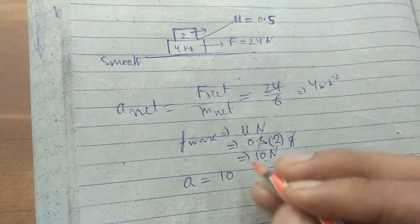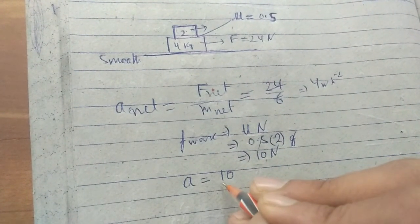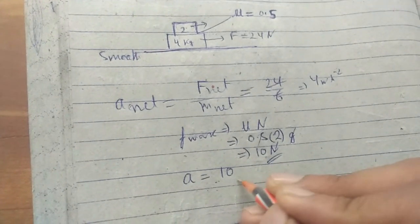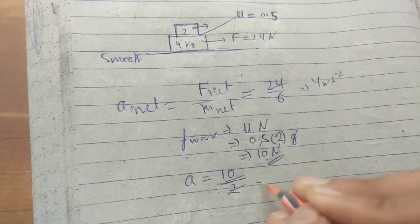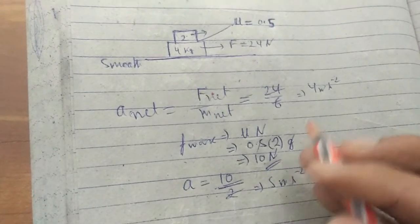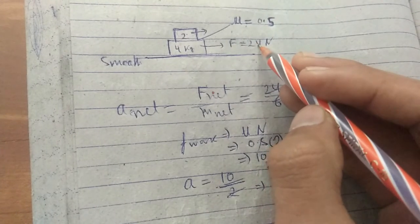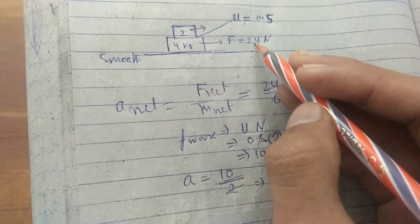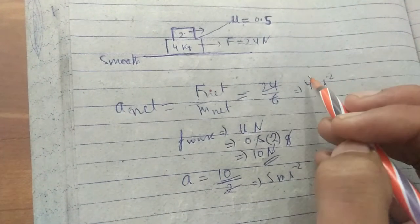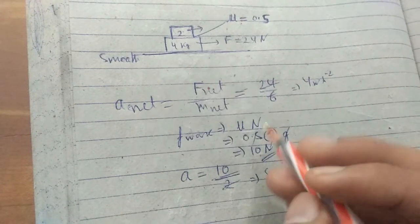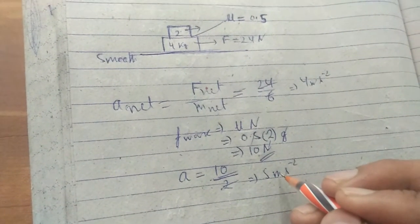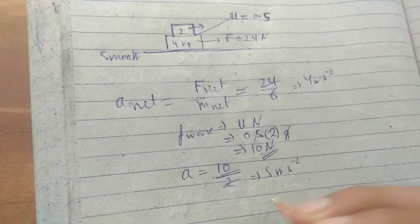So the acceleration on the 2 kg block system will be net force upon mass: 10 N upon 2 kg. So it can provide a maximum acceleration of 5 m/s². But this force is applying a maximum acceleration of 4 m/s². And this friction force can give a maximum acceleration of 5 m/s², so friction force will adjust here to its lesser value.